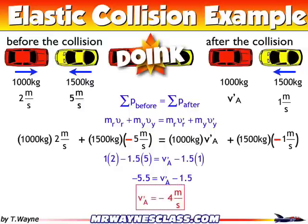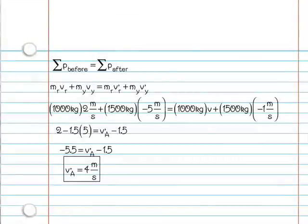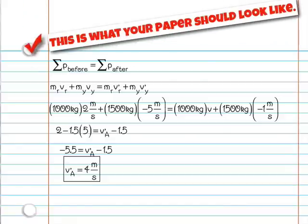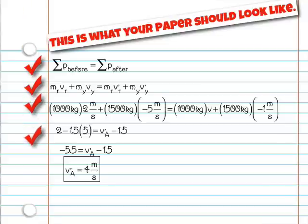Notice that in the before situation I wrote the variables without any marks, but afterwards I put little prime marks just to indicate that they mean something different than what they did in the beginning — that's the only reason for the prime symbol. Now your paper should look something like this. These are all the steps I'm expecting to see: the summation showing you're conserving momentum, an expression showing you know what momentum is and how many objects there are before and after, numbers and units as always, a little bit of math, and then finally the answer — in this case, 4 meters per second.